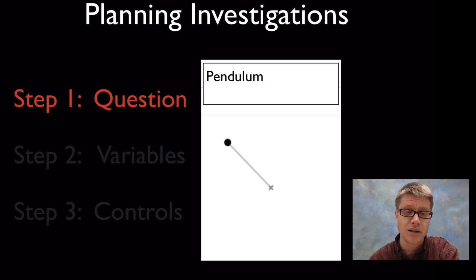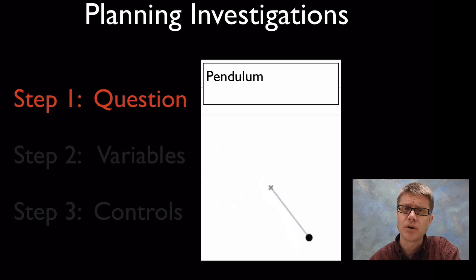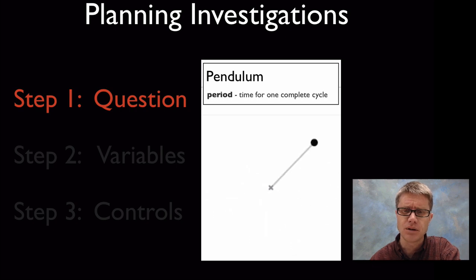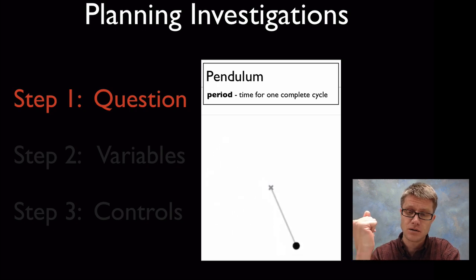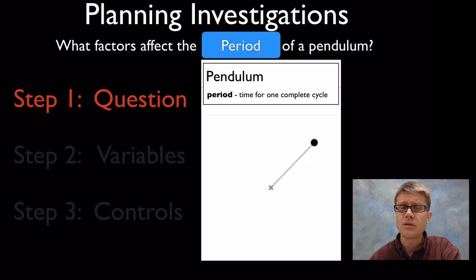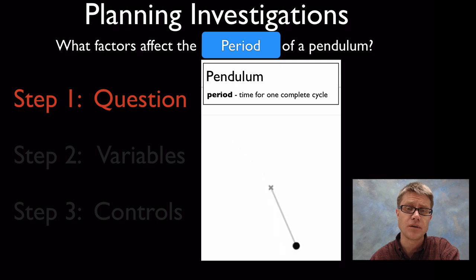Let's say I am observing a pendulum, just watching it swing back and forth, and I'm trying to come up with a good question. This is a virtual pendulum so it will never stop. A good question I might come up with is related to the period — the period being how long it takes for the pendulum to complete one cycle. It sounds like about three seconds to go through one period. So maybe that's going to be the factor I want to study — what factors affect the period of a pendulum?